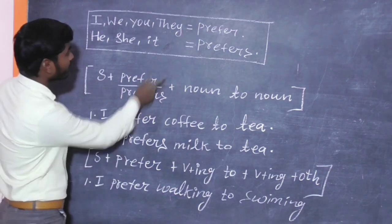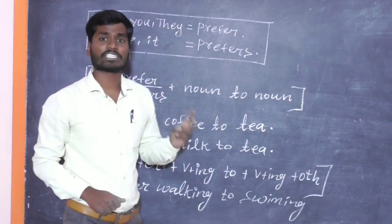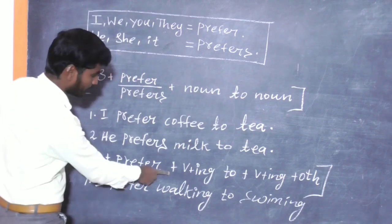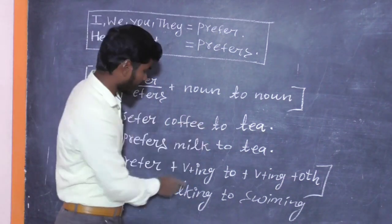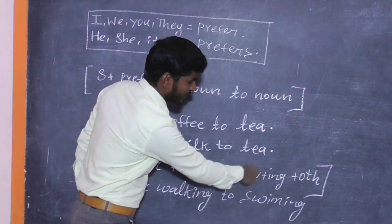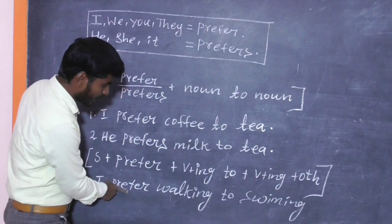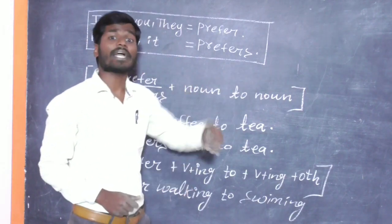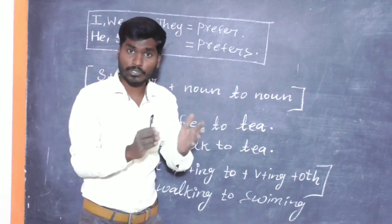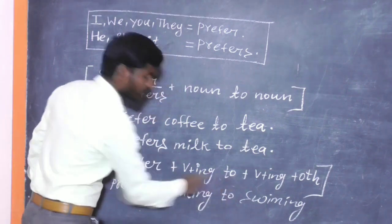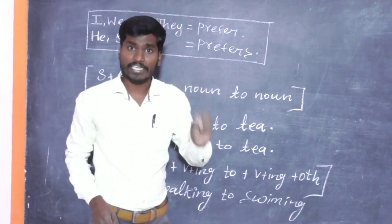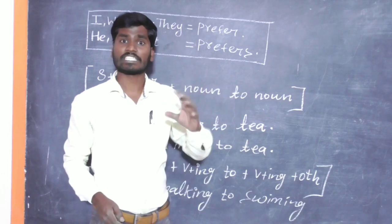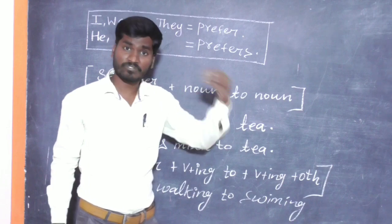Now another structure: Subject plus PREFER or PREFERS. For third person singular — he, she, it, or any name — use PREFERS. The second pattern is: PREFER/PREFERS plus Verb+ing to Verb+ing. This is called a gerund. For example: I prefer walking to swimming. I prefer reading to watching TV. He prefers walking to swimming.